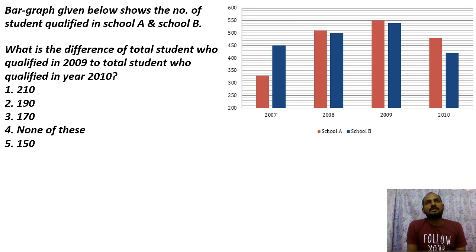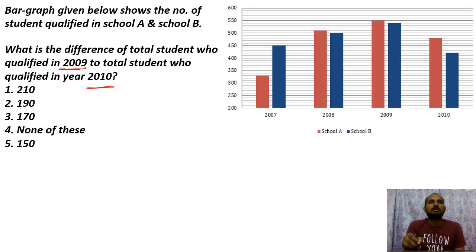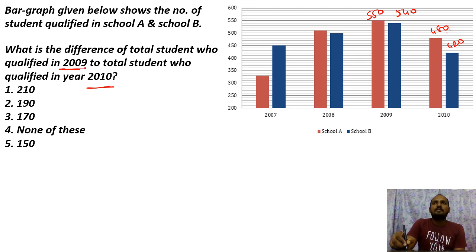Next question: What is the difference between the total students who qualified in 2009 and the total students who qualified in 2010? The difference between 2009 and 2010 — for 2009 we have 550 and 540, and for 2010 we have 450, 470, and 480, plus 420.